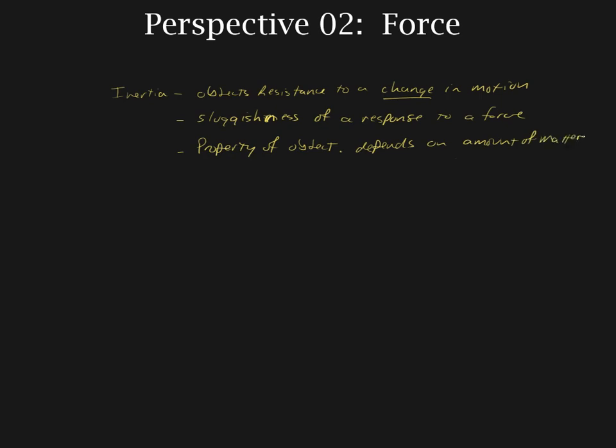And basically this property depends on how much matter it contains. Now when we talk about matter really what we're talking about are protons, neutrons, and electrons. Because all objects are made up of those three fundamental particles. So if you have something which is very dense then those particles are all crammed very very close together. And if you have something that is not very dense at all then those particles are going to be spaced very far apart.